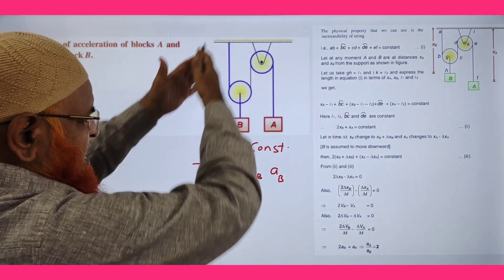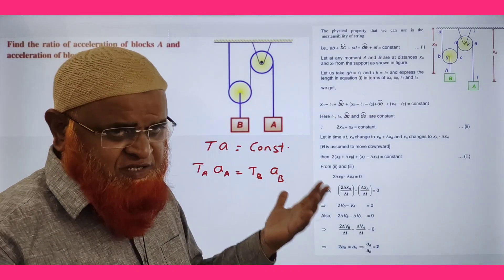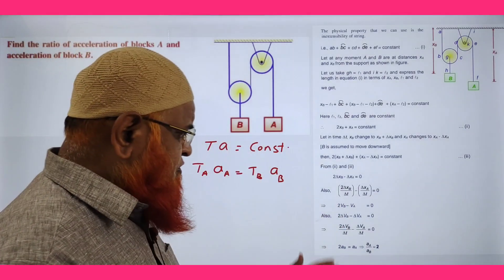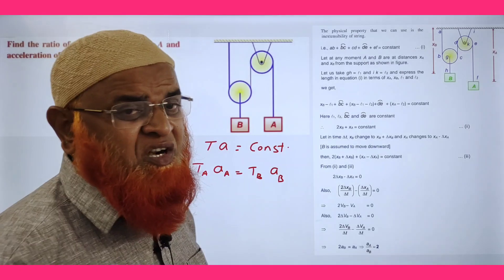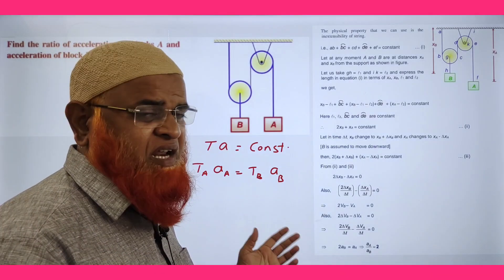What is the logic? So this is a diagram having two blocks and two pulleys. In this, instead of following the constraints method, the constraints method is very complex, very confusing.